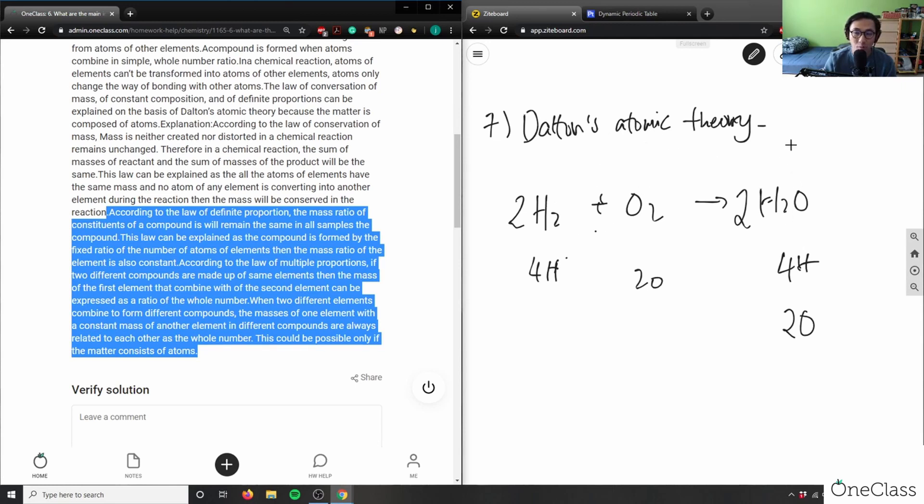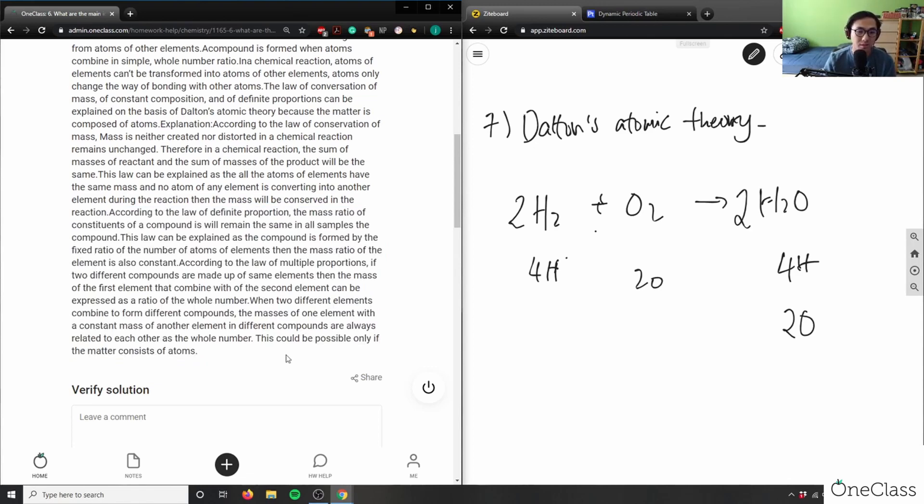If I have two elements to form one element here, the masses of them are the same because I have four hydrogens here, four hydrogens here, two oxygens and two oxygens here. When two different elements combine to form different compounds, the masses of one element with a constant mass of another element in different compounds are always related to each other as a whole number. This is only possible if matter consists of atoms.